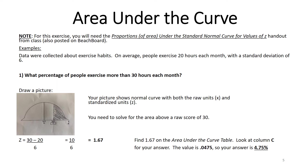I recommend drawing a picture to answer this type of question. The picture shows a normal curve with both raw units x and standardized units z underneath. The mean was 20 in raw units, which corresponds to z equals zero at the center. I drew a line to mark where a value of 30 falls — to the right of the mean since 30 is greater than 20. Underneath the 30 is a question mark, because we need to solve for that z-score first.